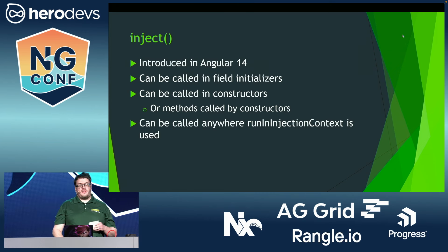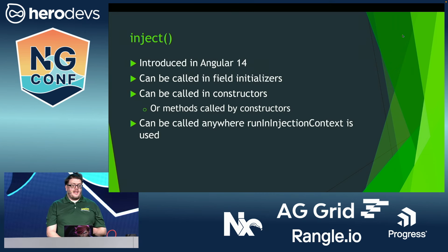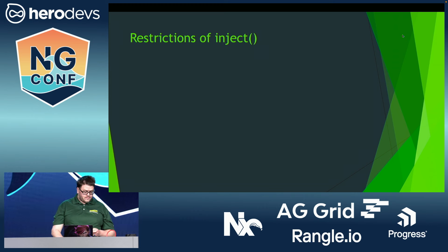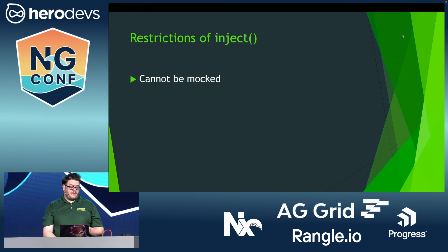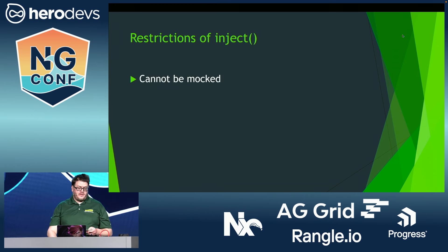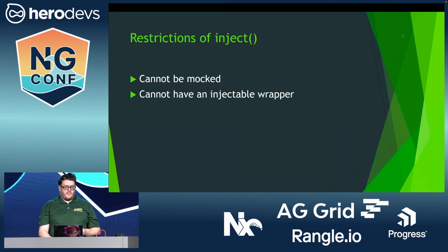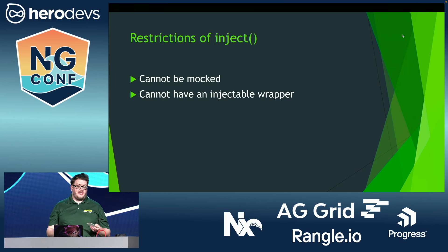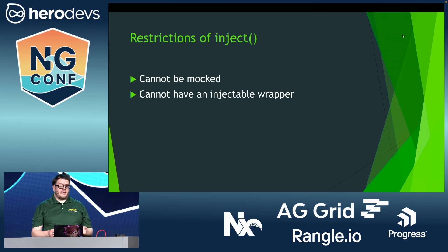That seems like an excellent ability to have at first glance, but it actually has some significant implications regarding test isolation. For example, as a globally imported function, the inject function is very difficult to mock in tests. Also, because it's how you access the injection container in the first place, an injectable wrapper for it can't be created.